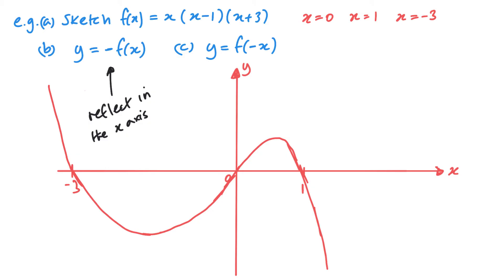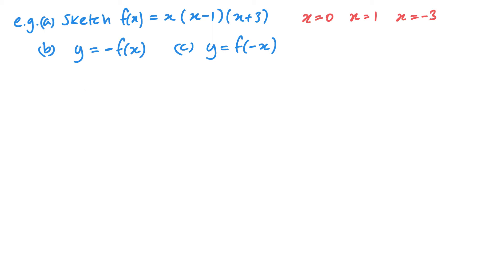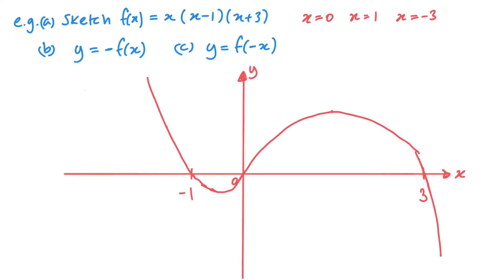Let's remind ourselves what the original f of x graph looked like. For part c, the minus sign is now inside the brackets. Inside the brackets affects the horizontal direction — the x values. I'm going to divide by negative 1. So all my negative x values become positive, and these positive x values become negative. So I end up with a graph that is reflected in the line x equals 0, or the y-axis.